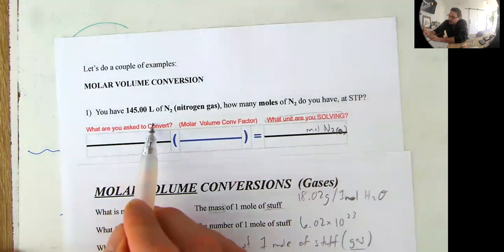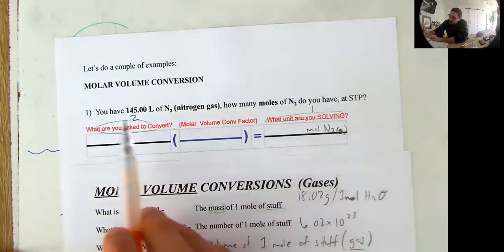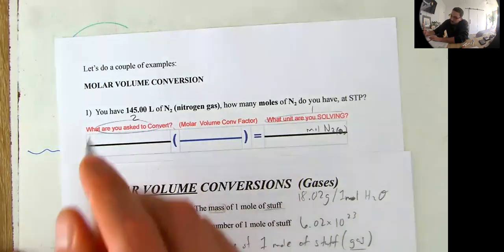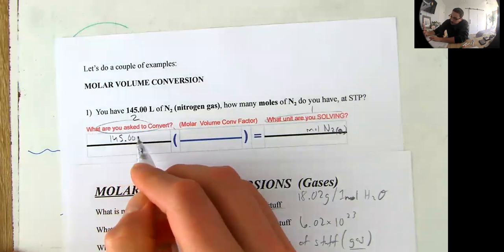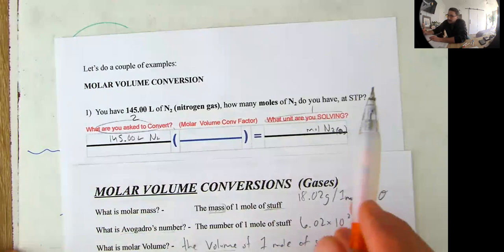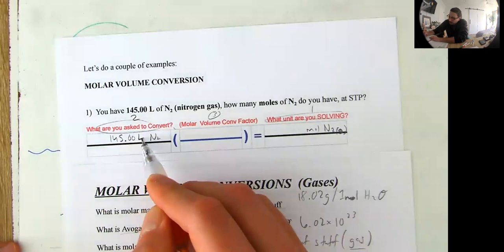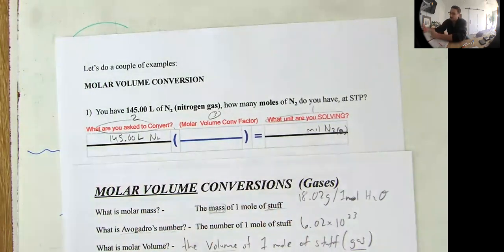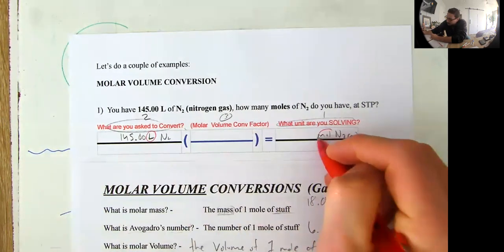Okay. Then we need to know what are we asking to convert into moles of nitrogen? Well, if we have 145 liters of nitrogen, how many moles is that? Well, we need to convert the 145 liters. 145.00 liters of the nitrogen gas. Okay. And then the last step is putting in the correct conversion factor. Well, we need to be converting from liters into moles.